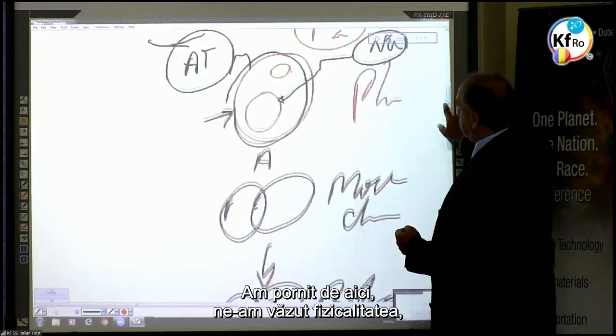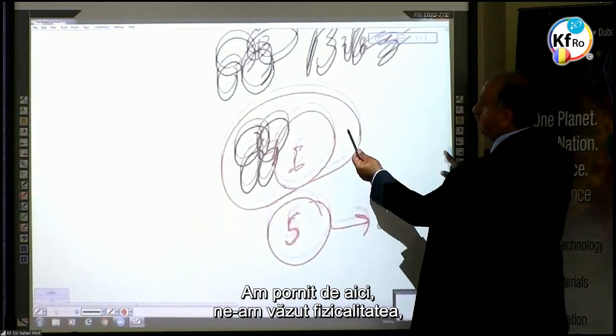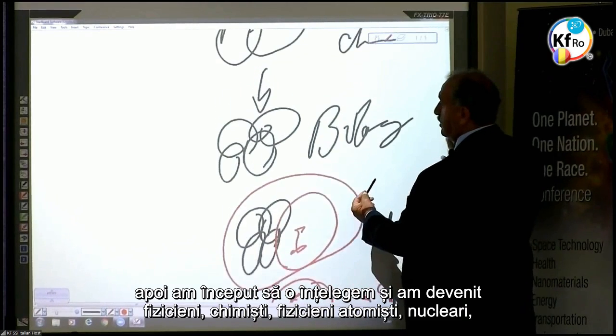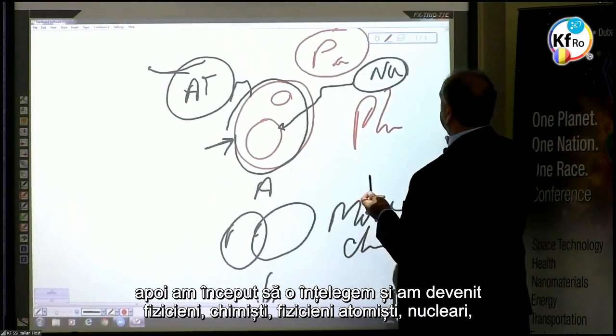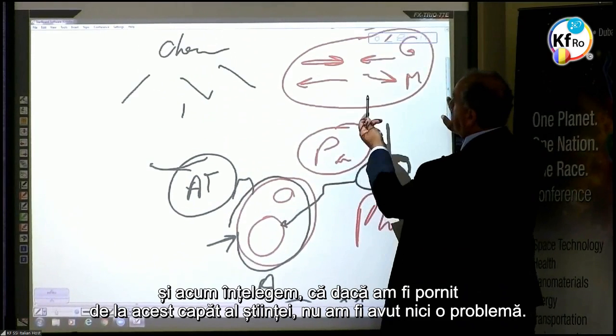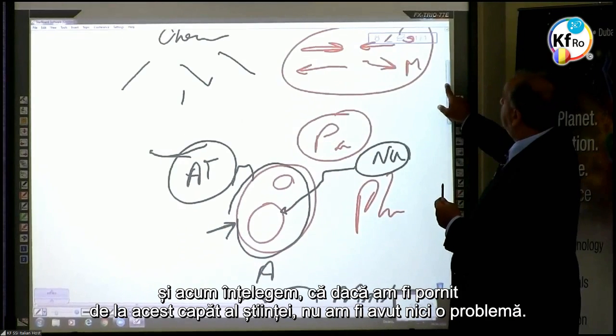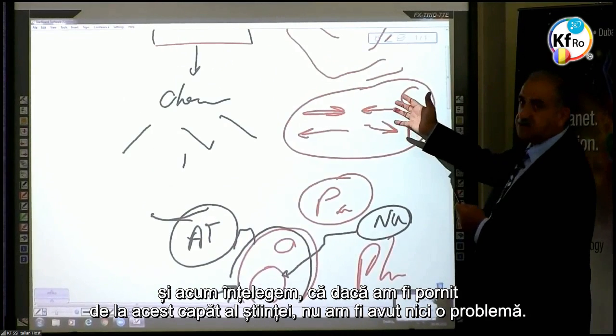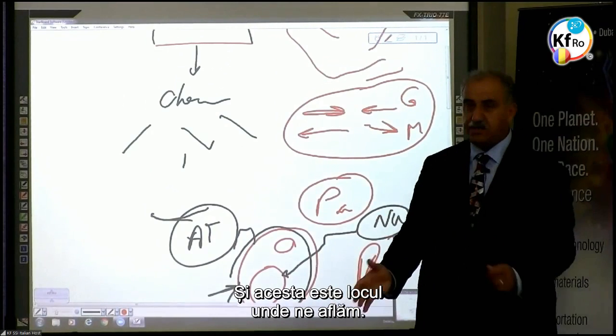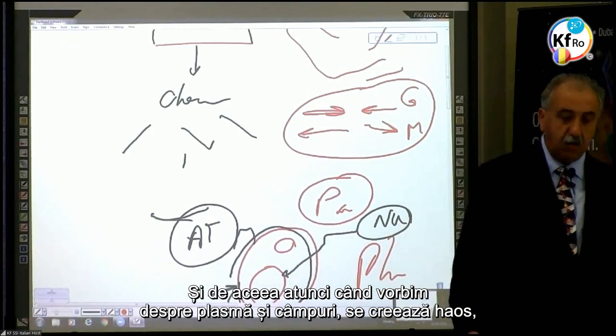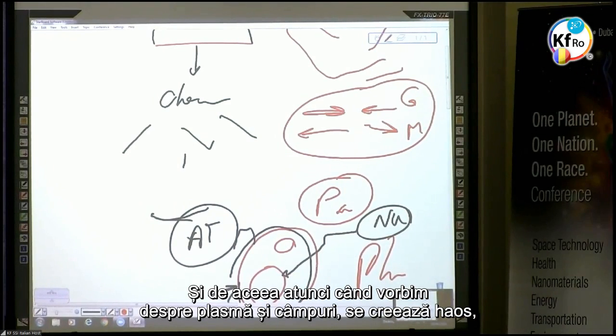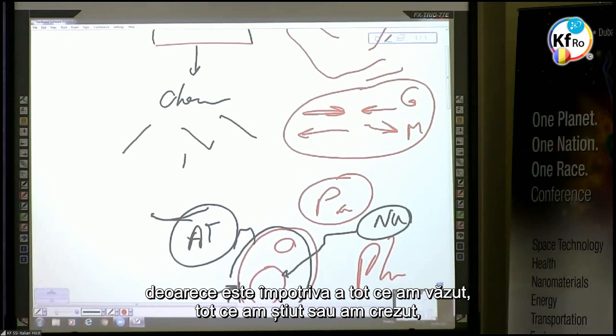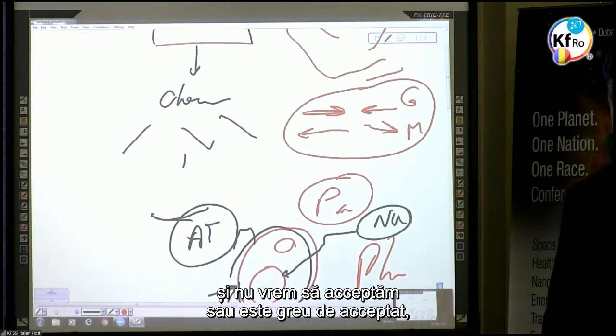We started from here. We saw our physicality, and then we started seeing it. We became physicists, then became chemists, then became atomic physics and nuclear. Now we understand, if we would have started from this end of the science, we would have had no problem. This is where we are now. Why when we speak about plasma and the field has created a mayhem, because it goes against everything we've seen, everything we knew, everything we were taught, and we don't want to accept, or it will be hard for us to accept, how come we were so ignorant of what we saw every day.